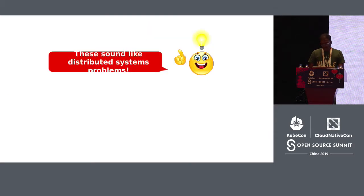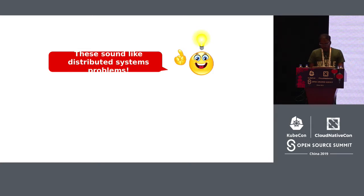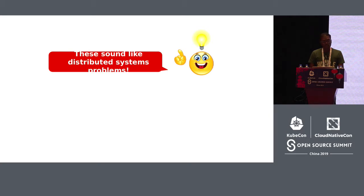Not surprisingly, these are distributed system problems — the things we study in computer science operating systems classes. We learn how virtual memory managers work, how TCP sliding window protocol works, but we don't expect application developers to implement TCP sliding window protocol in their applications, or decide which memory should go on disk versus RAM. This should be abstracted away, which at the moment is not the case for distributed systems.